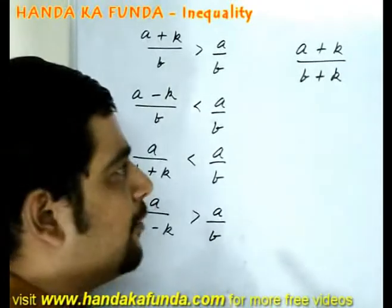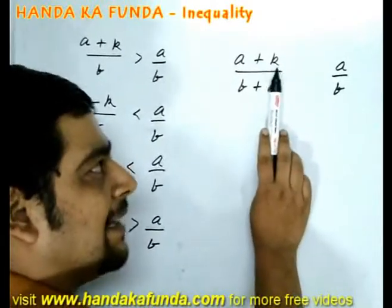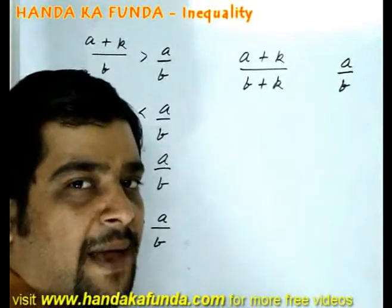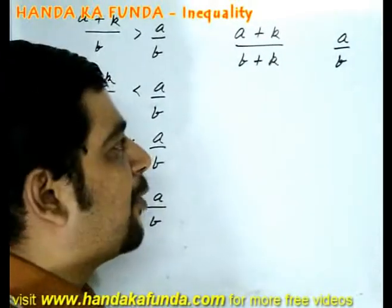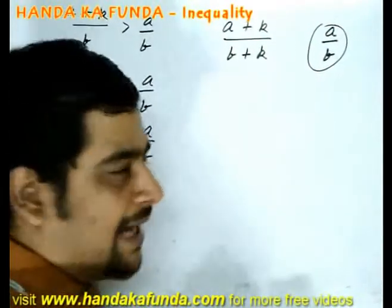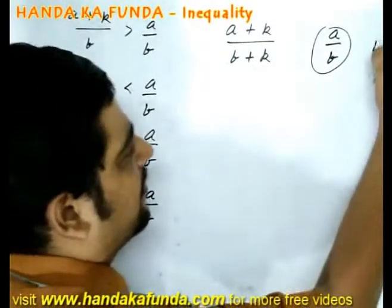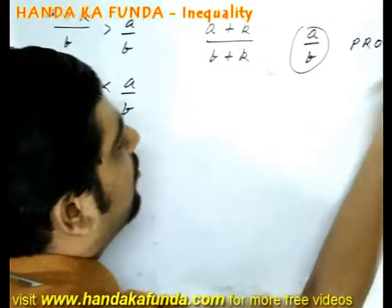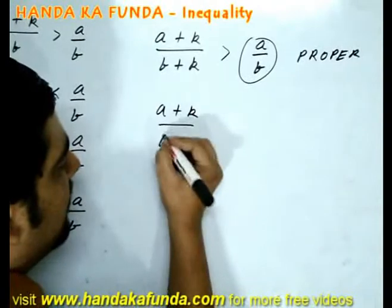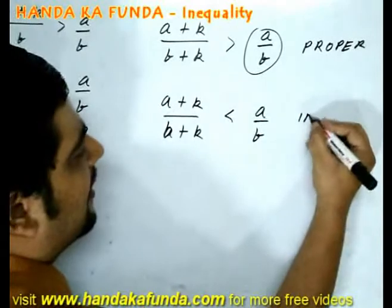These might seem obvious, but can you tell me what will happen to a fraction a by b if I add the same value to both the numerator and the denominator? Think about it for a while — you may pause the video. It depends upon whether a by b is a proper fraction or an improper fraction. If a by b is a proper fraction, the value is bound to increase; however, if it is an improper fraction, the value will decrease.